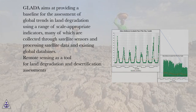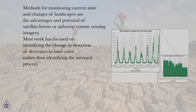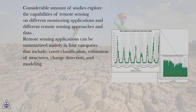Remote sensing is a tool for land degradation and desertification assessments. Methods for monitoring current state and changes of landscapes use the advantages and potential of satellite-borne or airborne remote sensing imagery. Most work has focused on identifying the change in detection of decreases in land cover rather than identifying the inverse process. Considerable studies explore the capabilities of remote sensing on different monitoring applications and data.